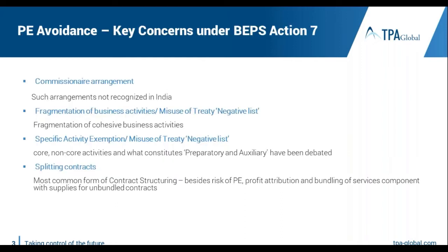To briefly recap, the four important areas where BEPS Action Point 7 focused are: commissioner arrangements, fragmentation of business activity, the specific exemption list — particularly the focus on preparatory and auxiliary activities — and splitting of contracts.